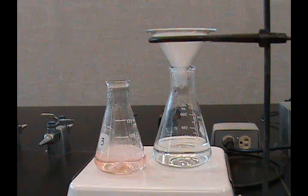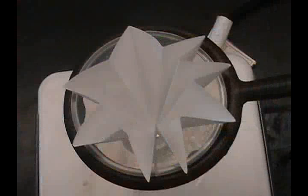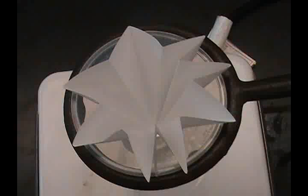In hot filtrations, a hot plate, a short stem or stemless filter is used to ensure minimal cooling, as well as fluted filter paper to increase the surface area between the filter and filtrate. This maximizes the rate in which the liquid flows through the filter paper.